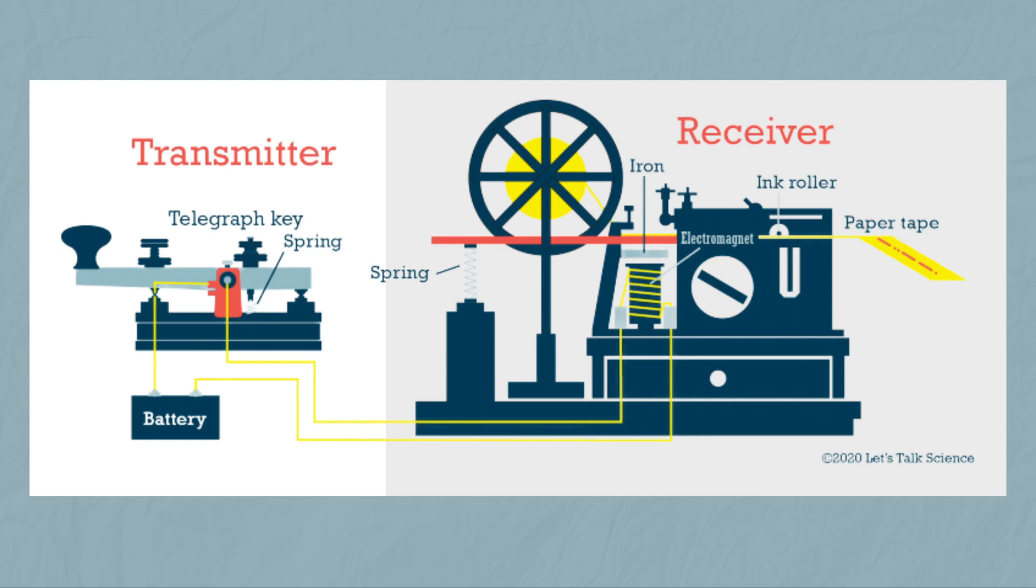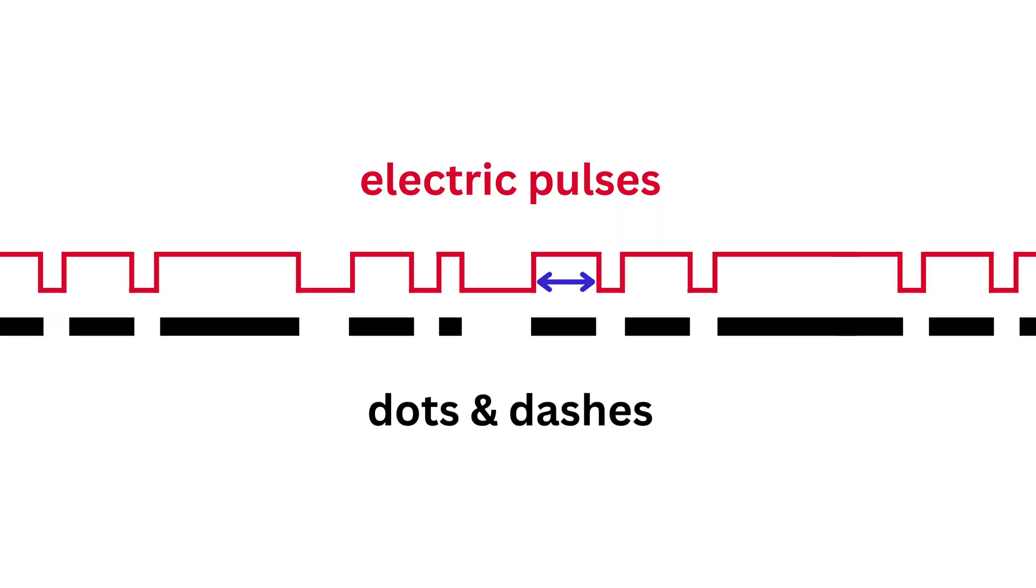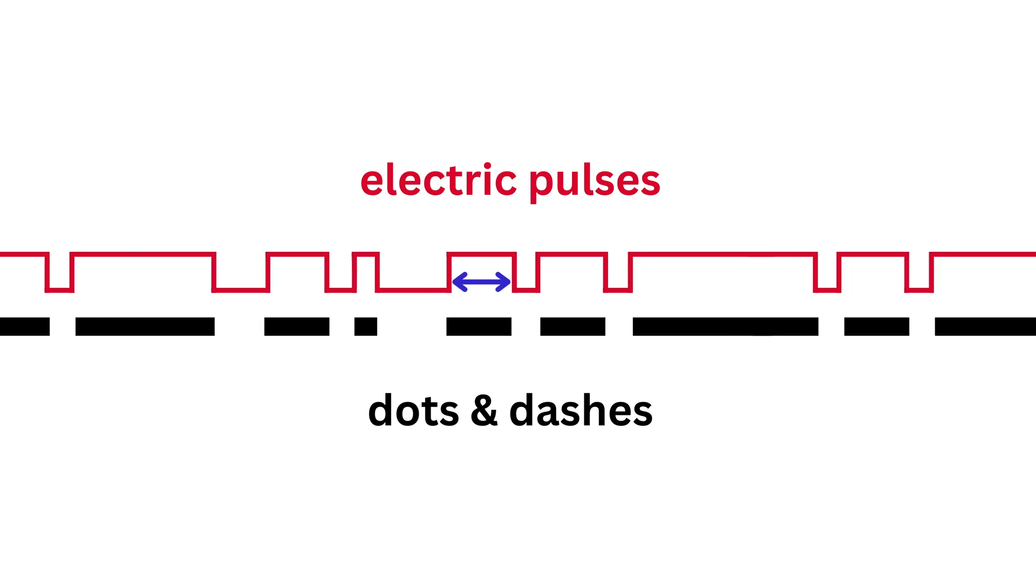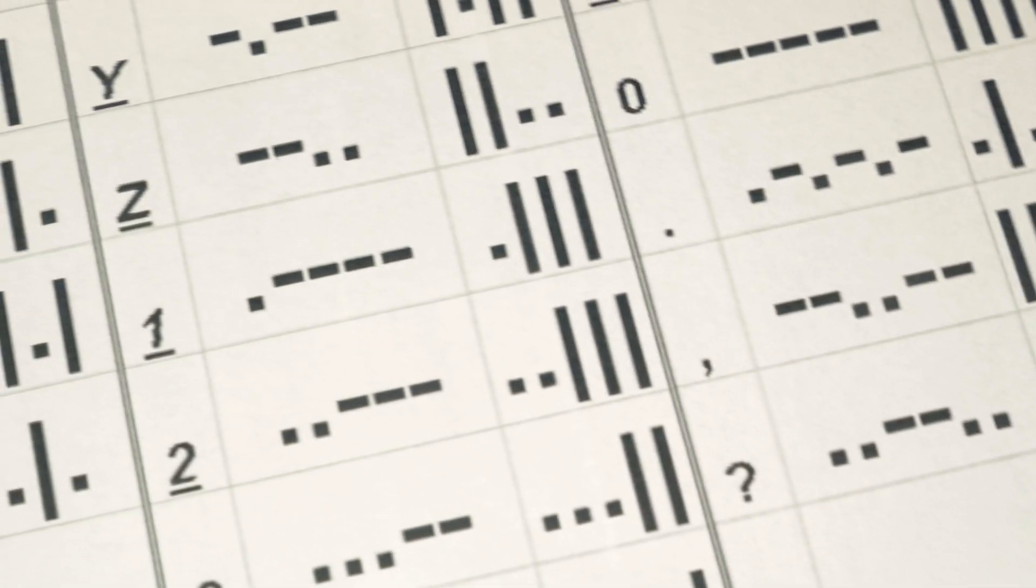So if the person at the transmitter held the lever down for two seconds, the ink roller at the receiver will be held down for two seconds. The length of the electricity pulse, and therefore the length of the dots and dashes, were used to represent certain letters and numbers that we know today as Morse code, named after Samuel Morse himself.